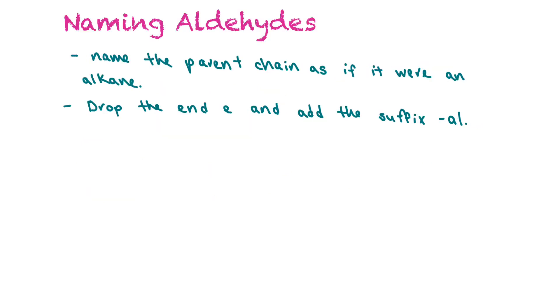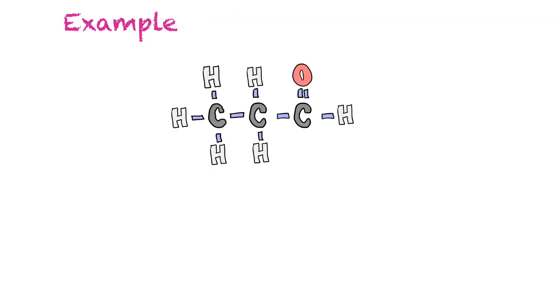Now for aldehydes, they're quite simple to name. You just name the parent chain as if it were an alkane, but then you drop the end E and add the suffix AL to the end. So for our first example, we'll count the number of carbons. So there's one, two, three. So if it were an alkane, it would be propane, but we drop the E. So it's going to be propanal, and that's how you name an aldehyde.